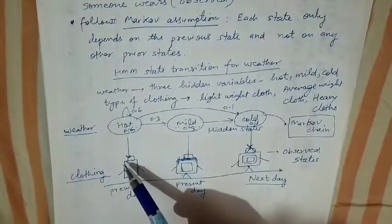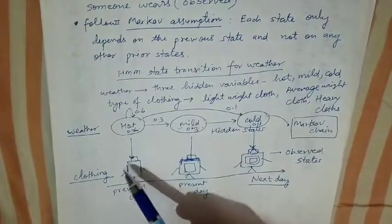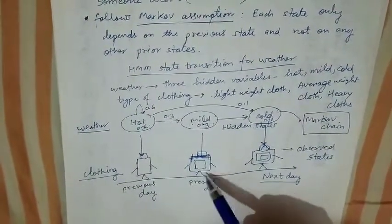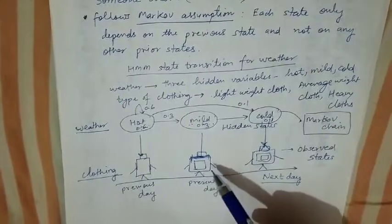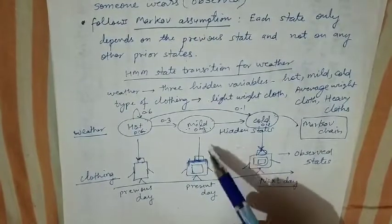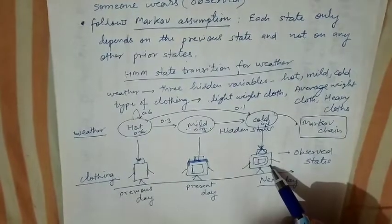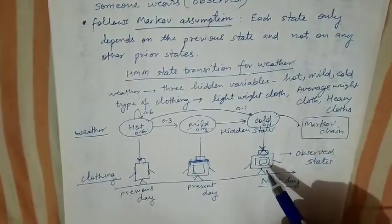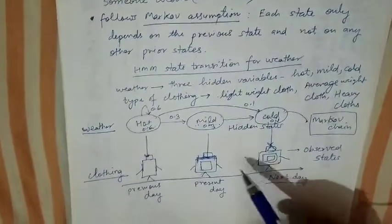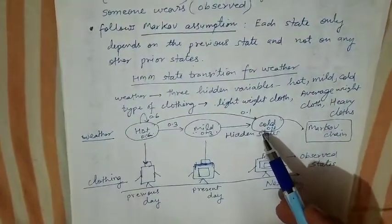The hot state corresponds to states where people wear very lightweight clothing. If people are wearing average-weight clothing, it seems it is a mild season. If a person is wearing heavy-weight clothing, the season is cold. So based on these observed cases — the clothing people wear — we are able to predict the weather condition, the hidden state, using the Hidden Markov Model.